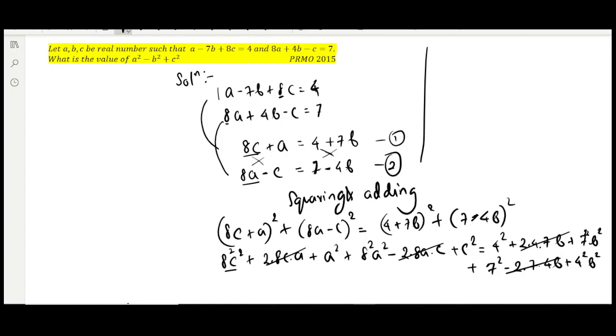So 8 square c square and 8 square a square—if we take out 8 square common, you will get 64 common. You will get c square plus a square.